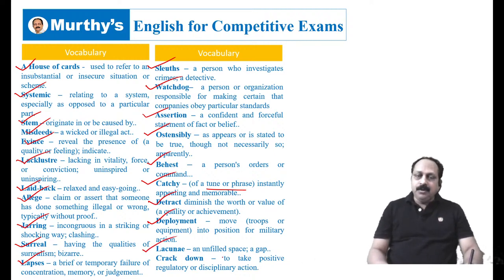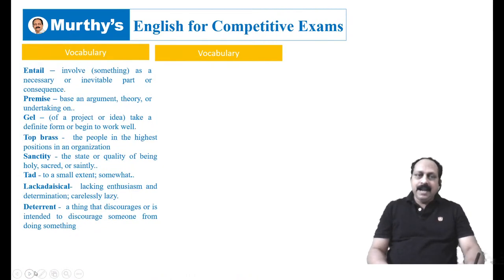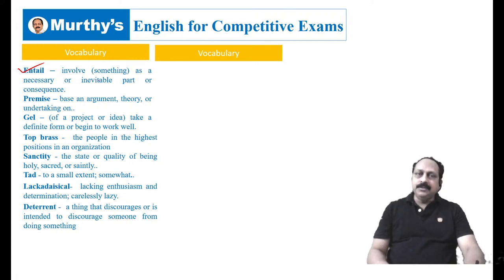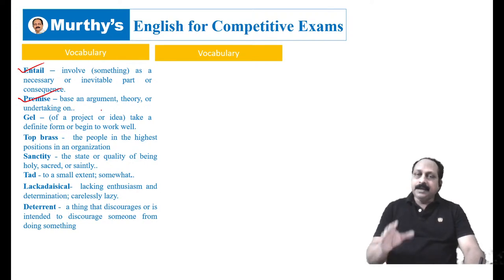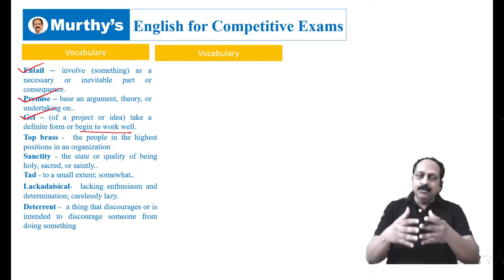Lacunae — another important word. An unfilled space or a gap — it's a foreign word meaning gap. Crackdown — phrasal verb — to take positive regulatory or disciplinary action. Entail — involve something as a necessary or inevitable part or consequence. It entails something means involves something as a necessary or inevitable part. Premise — base an argument, theory, or undertaking on something. 'On the premise of' takes the preposition of. Gel — usually goes with conversational English. 'Gel with someone' means to mingle, to get along, take a definite form or begin to work well.